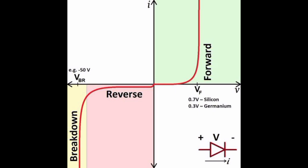If we use silicon diode the breakdown voltage is 0.7. If we use germanium diode the breakdown voltage is 0.3. The diode works only in forward bias.